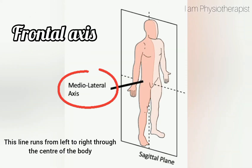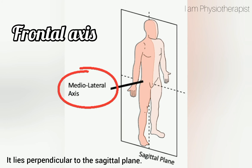Frontal axis: this line runs from left to right through the center of the body. It lies perpendicular to the sagittal plane.